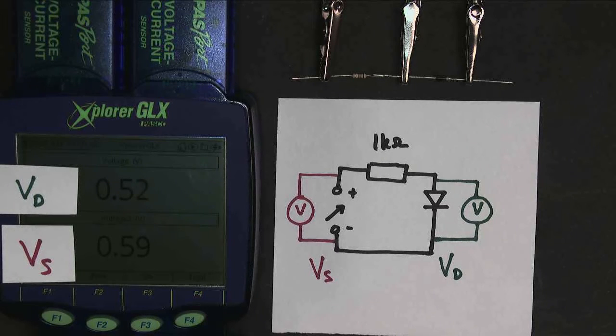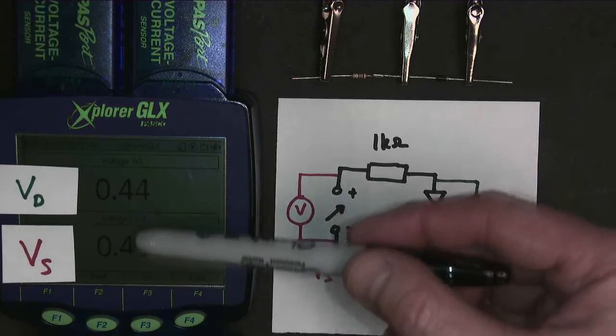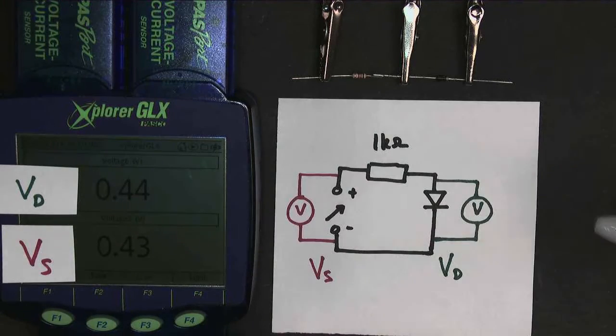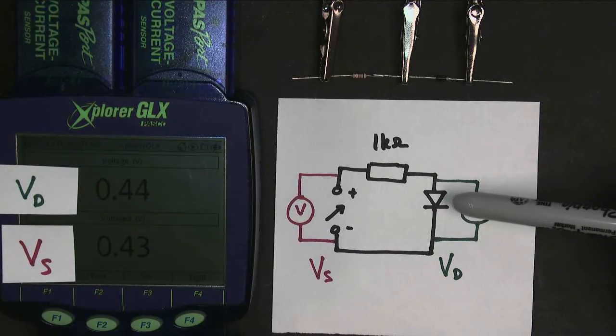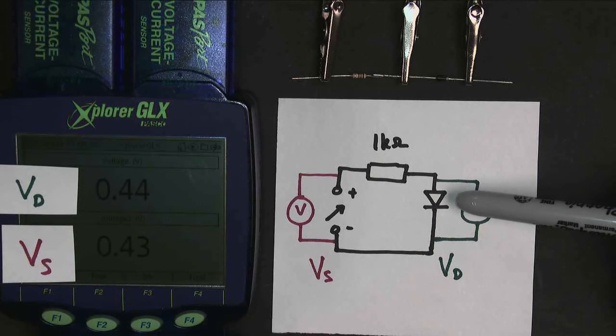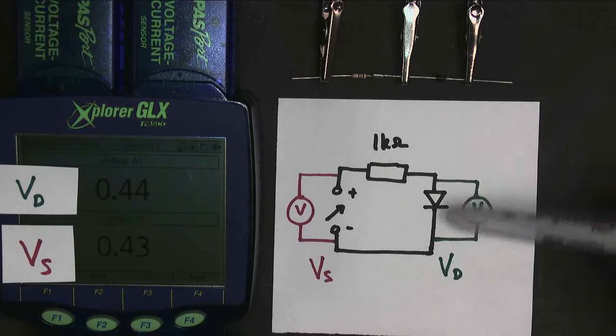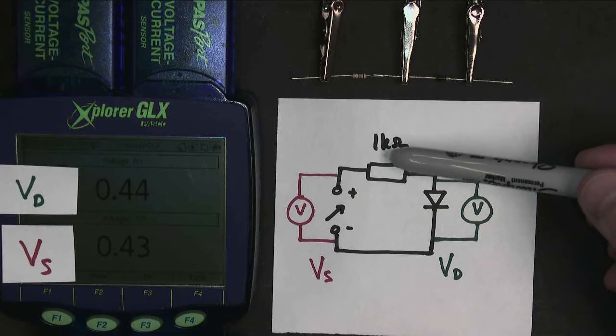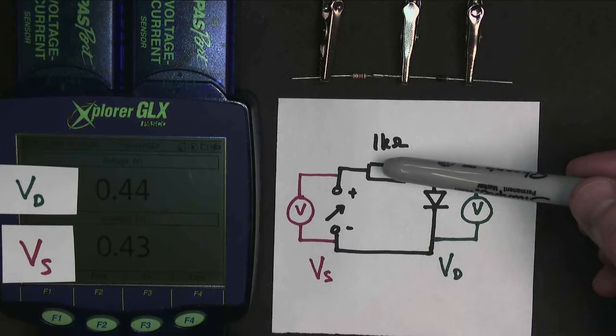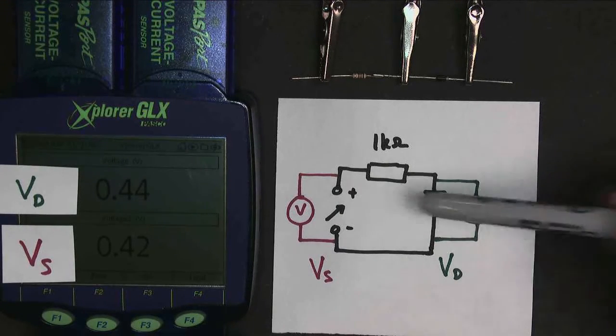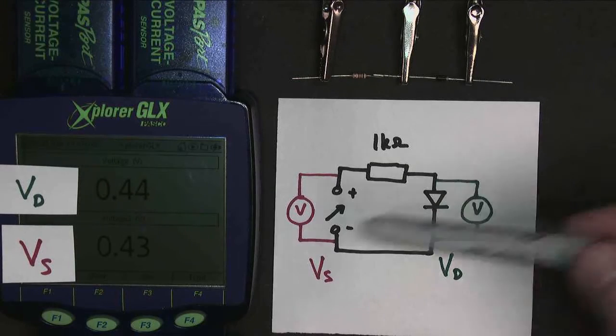Well, to start with, when the voltage is low, you'll notice that the supply voltage and the diode voltage are the same. The reason is the diode is not yet conducting. It needs 0.7 volts to conduct. No current flows around the circuit, so there is no potential difference across the resistor. Therefore, this voltage and this voltage are the same, as you can see.